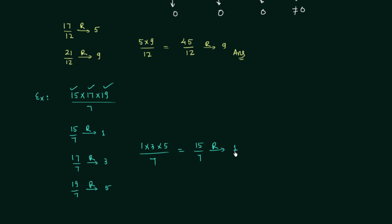The remainder is 1 because 7 multiplied by 2 is 14 and 15 minus 14 equals 1. So the answer is 1. I hope this process is clear to you.